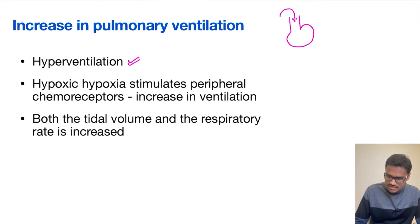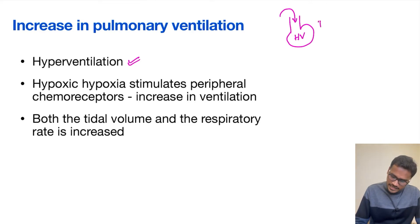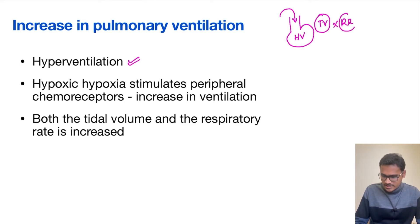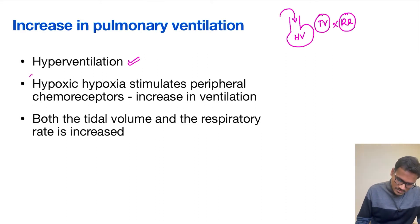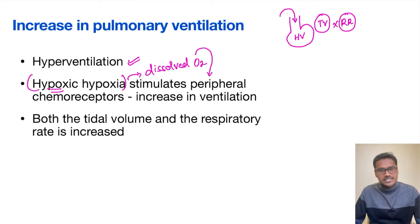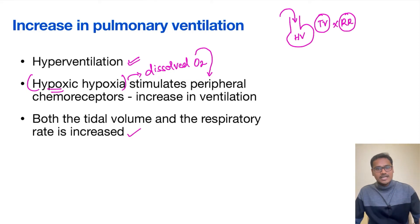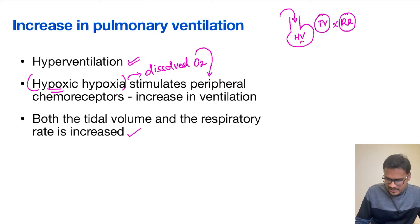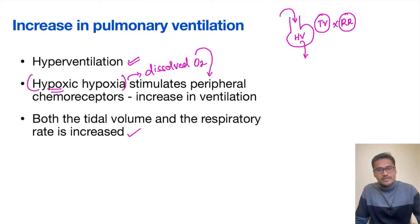In hyperventilation, both the tidal volume (the volume per breath) as well as the respiratory rate increase, so overall ventilation increases. This happens because hypoxic hypoxia causes dissolved O2 to decrease, which stimulates the peripheral chemoreceptors and increases the ventilation process. Both tidal volume and respiratory rate are increased, thereby improving pulmonary ventilation.